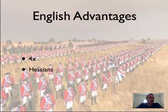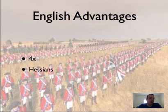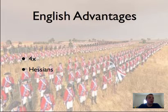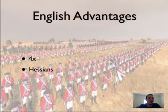England is by far a stronger military and economic power when the war begins. They have four times the population — that means four times the number of people they can call on and press into service, and four times the number of people they can tax to provide money for the war.